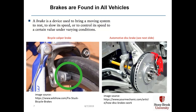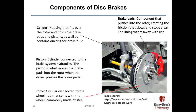Brakes are found in all vehicles — a brake being a device used to bring a moving system to rest, slow it down, or control its speed. On the left we have a bicycle caliper brake with pads squeezing against the wheel rims. On the right is an automotive disc brake. The caliper is the housing that fits over the rotor and holds the brake pads and pistons, and contains ducting for brake fluid. The piston is connected to the brake system hydraulics and moves the brake pads into the rotor when the driver presses the brake pedal. The rotor is a smooth circular disc bolted to the wheel hub, commonly made of steel, and the brake pads create the friction that slows and stops the car.